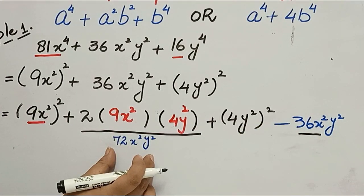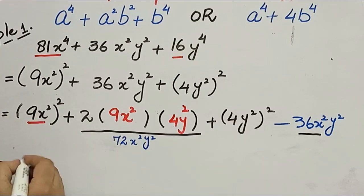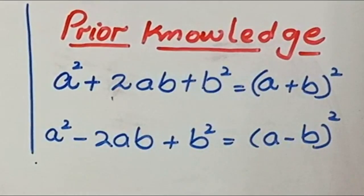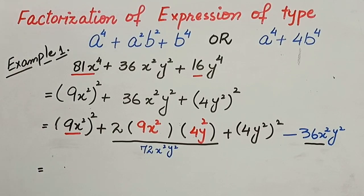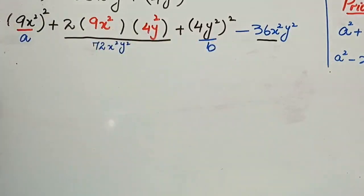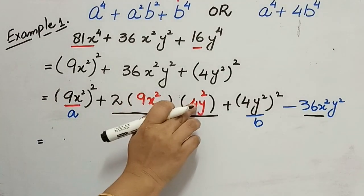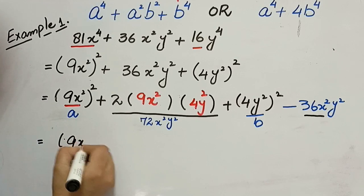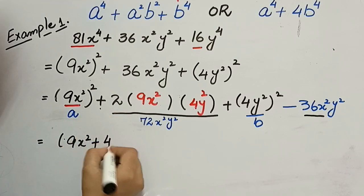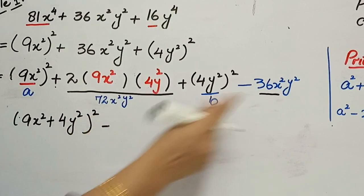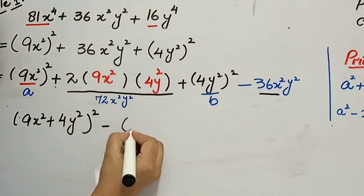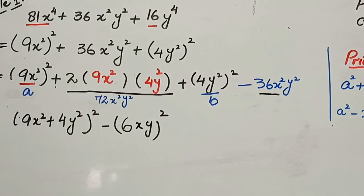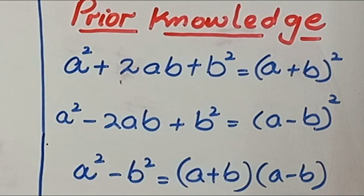Now this can be written using the identity a² + 2ab + b² = (a + b)². Consider 9x² as 'a' and 4y² as 'b'. So we get (9x² + 4y²)² minus 36x²y². Since 36 = 6², we can write 36x²y² as (6xy)².